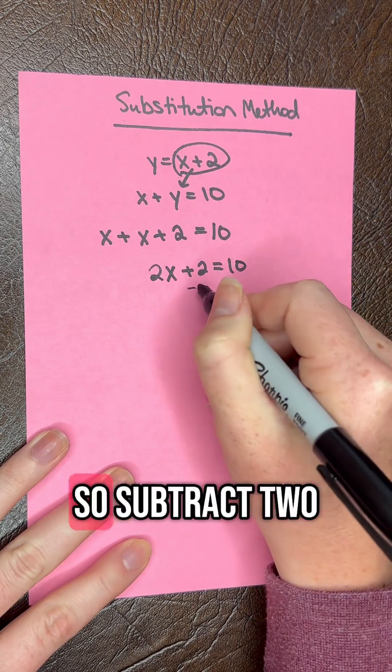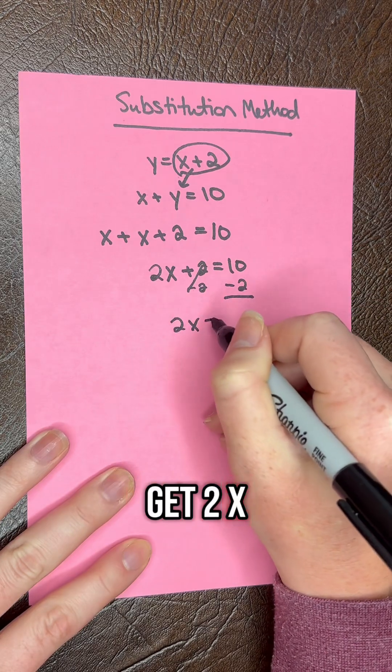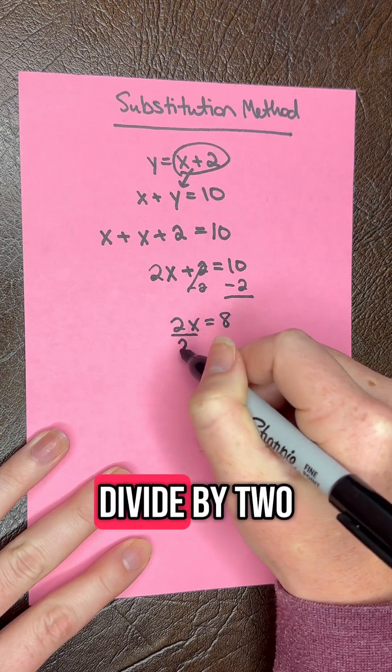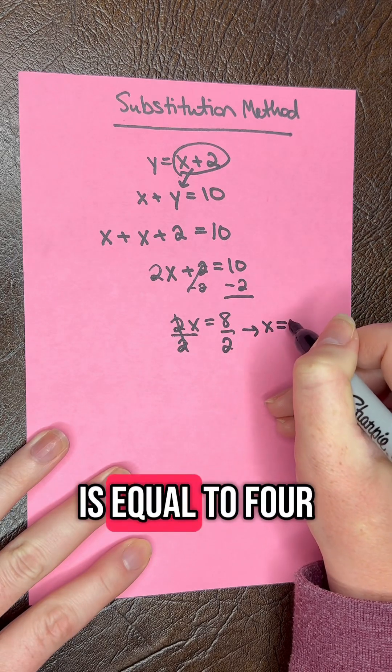And then we continue to solve. So subtract 2 from both sides. We're going to get 2x equals 8, divide by 2, and we're going to get x is equal to 4.